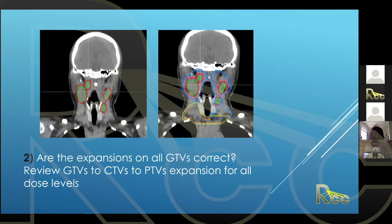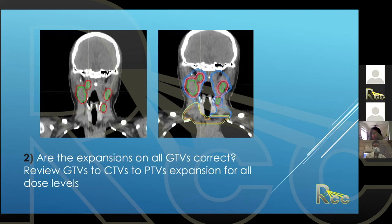Next, are the expansions on the GTVs correct? Generally, it's not just one node you're expanding — there are several nodes, and you sometimes go back and forth. People can forget to re-expand after making changes to a GTV. Double and triple check that your target volumes are all in and they're expanded appropriately before moving on to drawing your organs at risk.